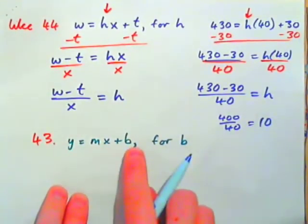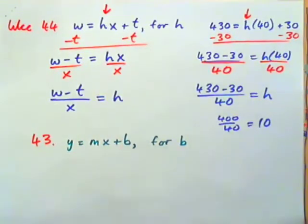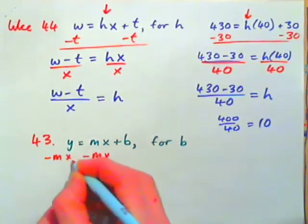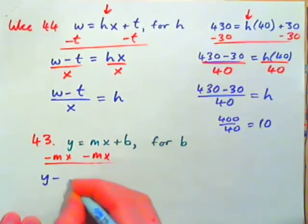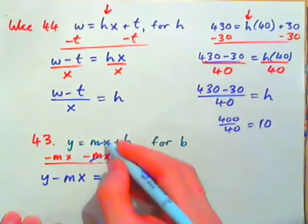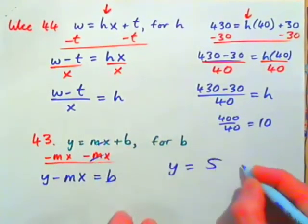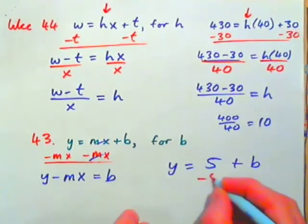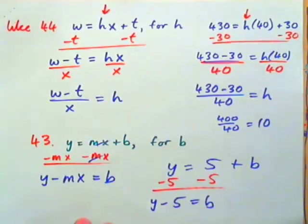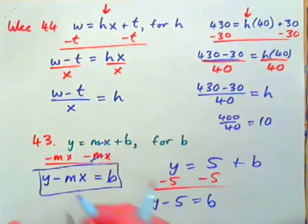Question 43: Y equals MX plus B — solve for B. All you have to do is subtract MX from both sides. MX is just a number on its own — like if you had Y equals 5 plus B, you'd subtract 5 from both sides. So Y minus MX equals B.